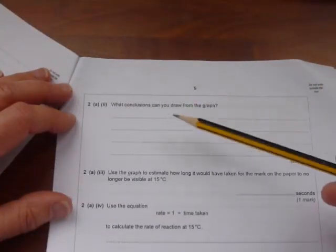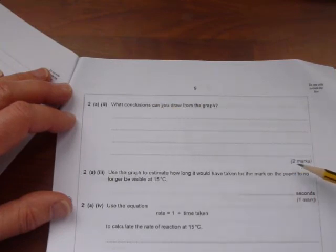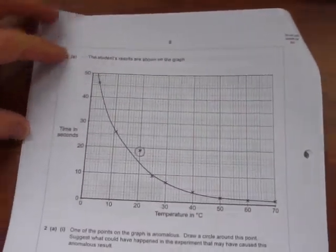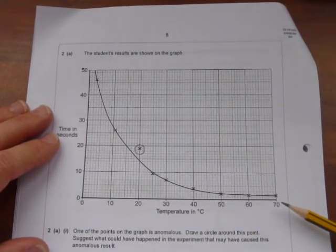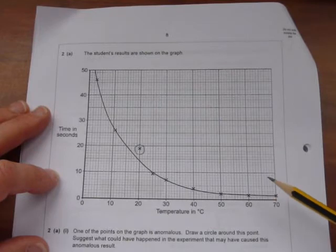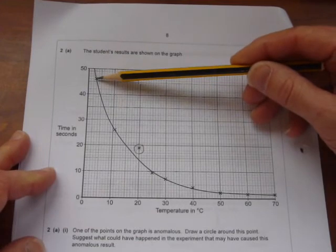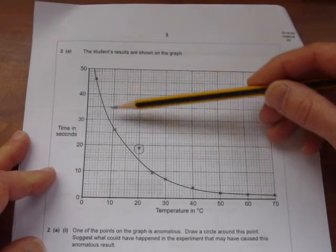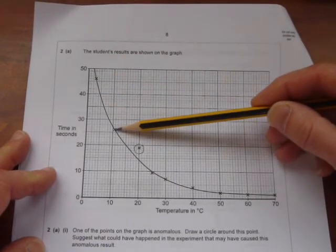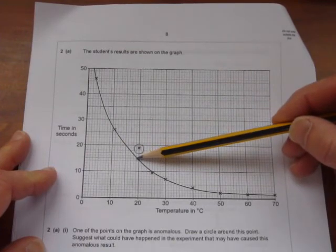The next part of the question says: what conclusions, in the plural, can you draw from the graph? It's worth two marks. One mark is fairly straightforward. You could say, as the temperature gets higher, the time taken to react, or for the cross to disappear, gets lower. But you can go further than that. You can see, for example, that between about two or three degrees and ten degrees, there's a big fall in the time taken. Between ten degrees and twenty degrees, there's a significant fall in the amount of time it takes to react.